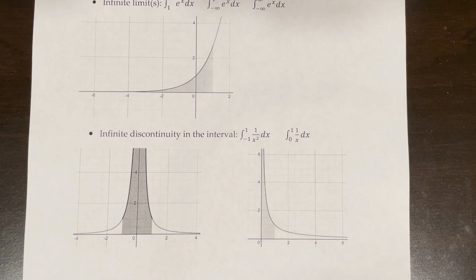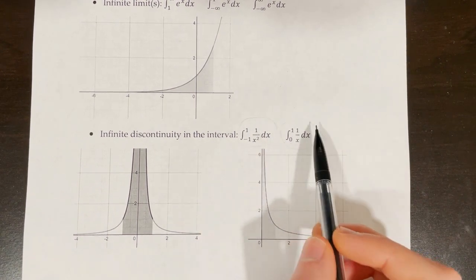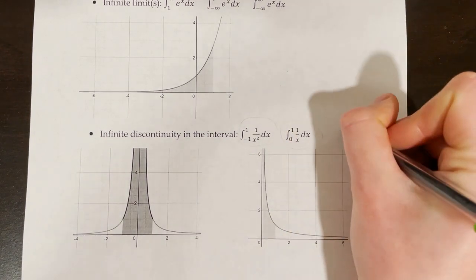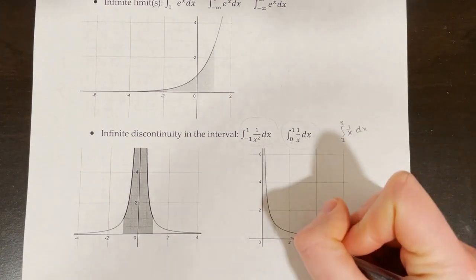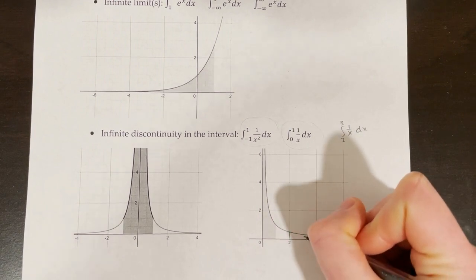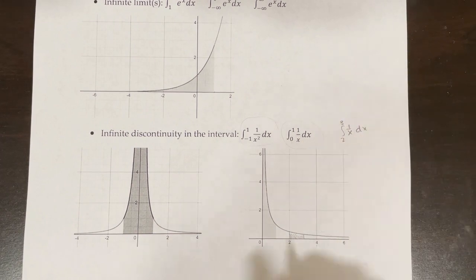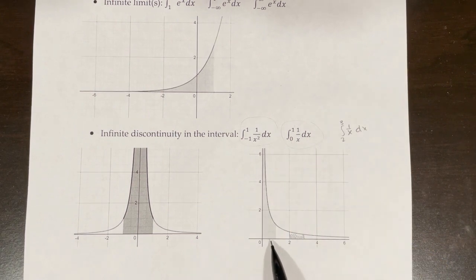Whenever you see an integral like this, you always need to check whether there is an infinite discontinuity in the integrand and, if so, whether it's in the interval. If we have something like the integral from 2 to 3 of 1 over x dx, that wouldn't be a problem at all — that would be a finite amount of space. That is not an improper integral. But if we have something like from 0 to 1, or maybe from negative 1 to 1, that is going to be a problem.